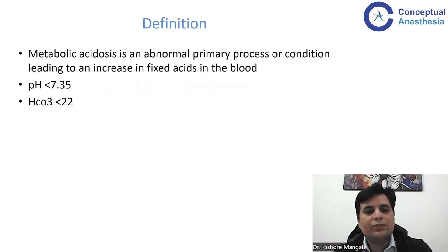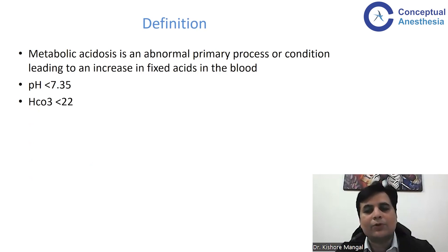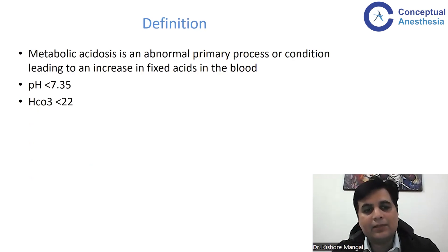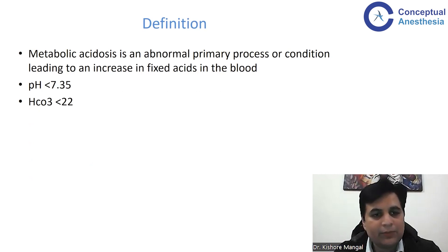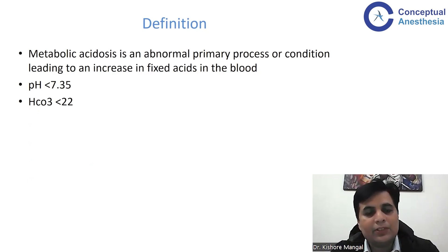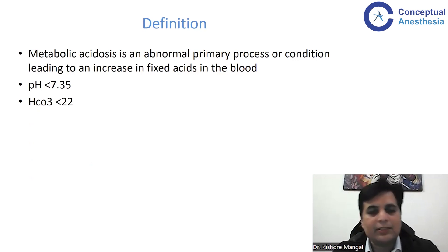Coming to metabolic acidosis, it is the condition where an abnormal primary process has led to an increase in fixed acids in the blood. That means the acid level has increased, and when the acid level increases, your pH will decrease. The pH will be less than 7.35 and your bicarbonates will also decrease — less than 20. Since we cannot directly measure the H+ ions, bicarbonates are taken as a surrogate marker.